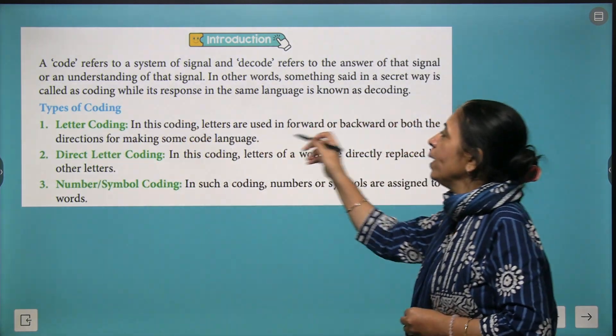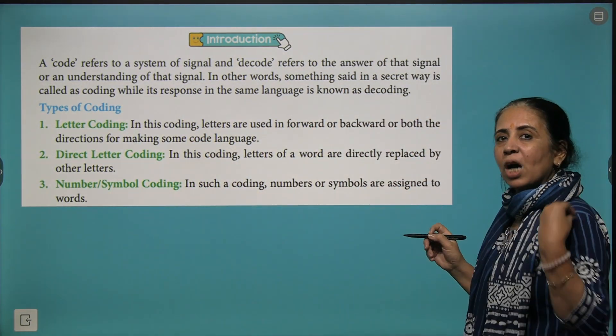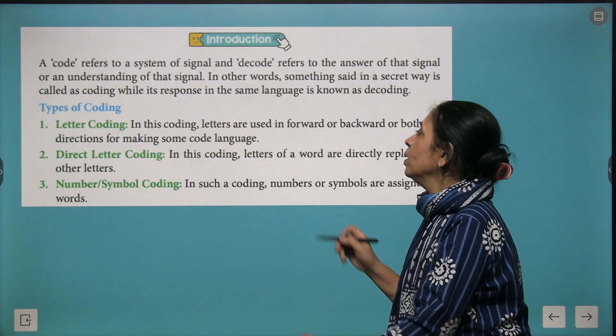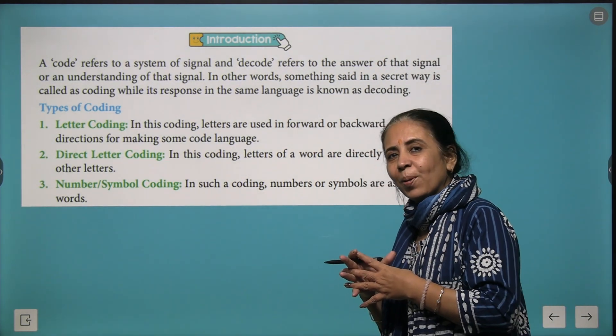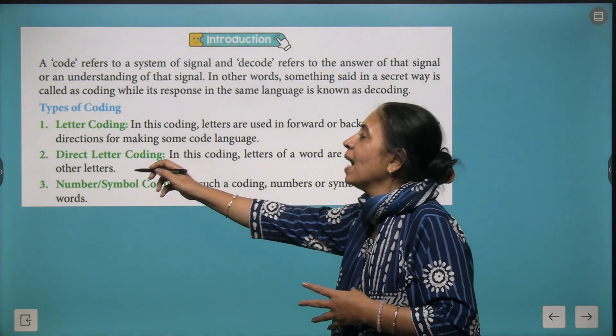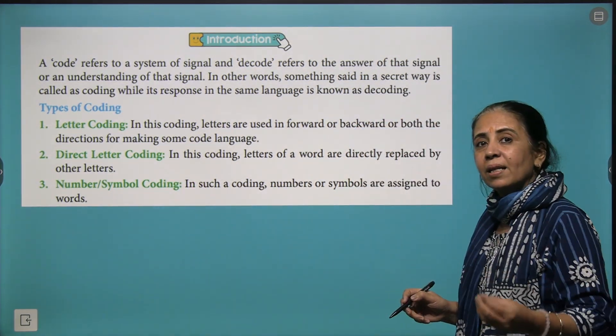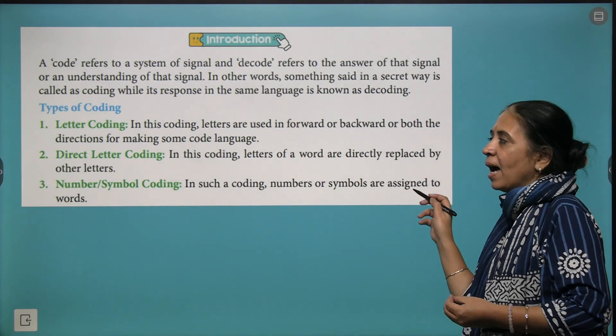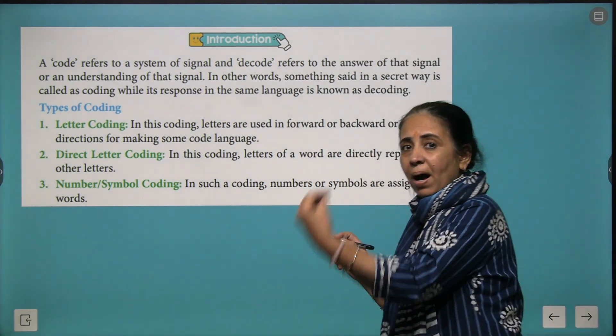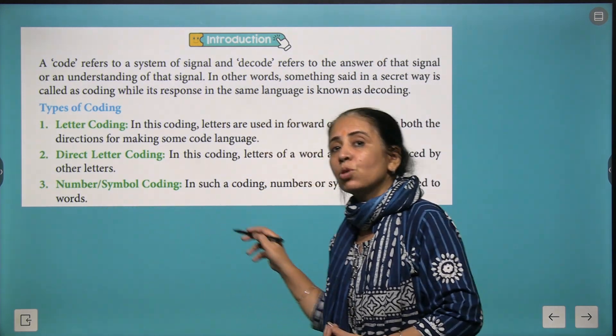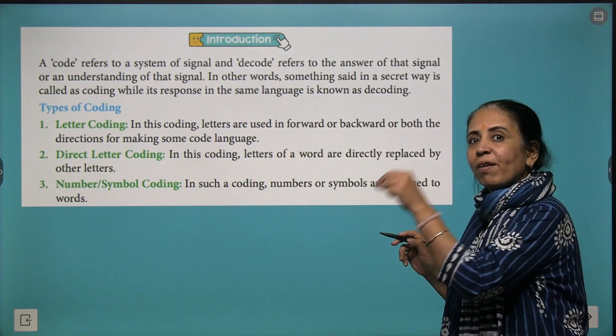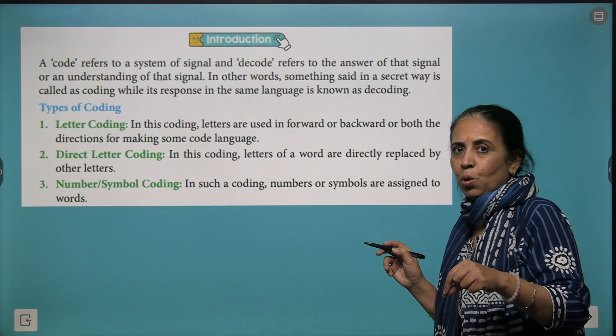What are the different types of coding you study? The first one is letter coding, where we have letters written either in forward or backward direction and some code language is created. Then direct letter coding, where the letter is directly replaced by some other letter. The third one is using some numbers or symbols as codes.